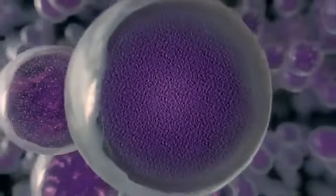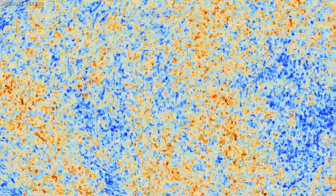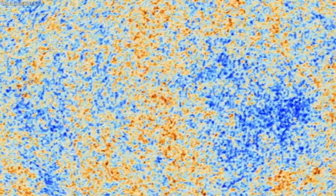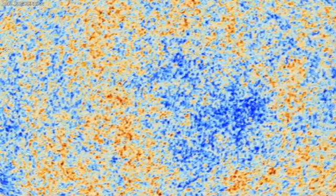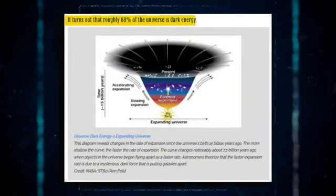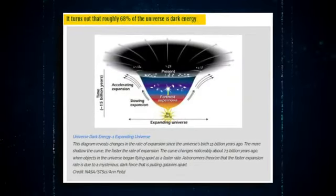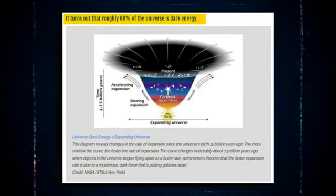As prevalent as atoms are thought to be, according to a cosmological model known as the lambda-cold dark matter model — sometimes just referred to as the standard model — they make up only about 5% of the universe. Additionally, dark matter and dark energy are not related in any way other than the fact that they both share the name 'dark.' According to the standard model, dark energy makes up about 68% of the universe.